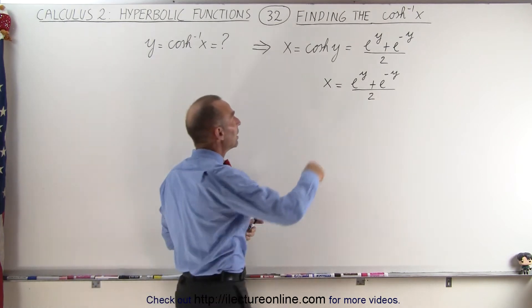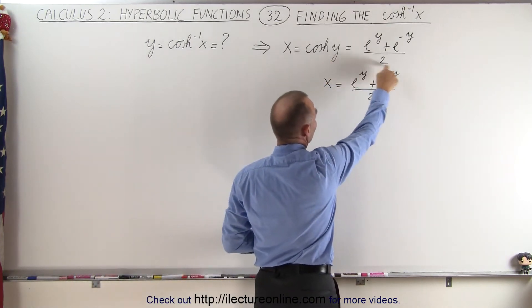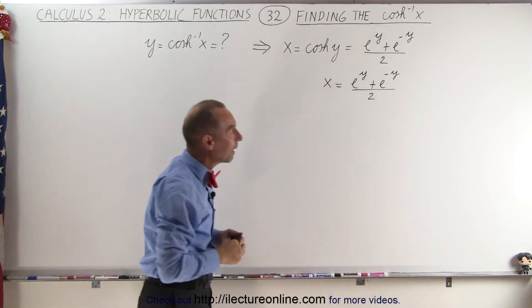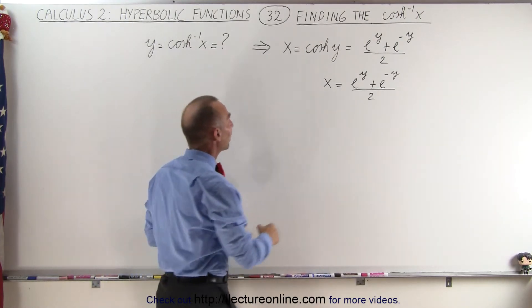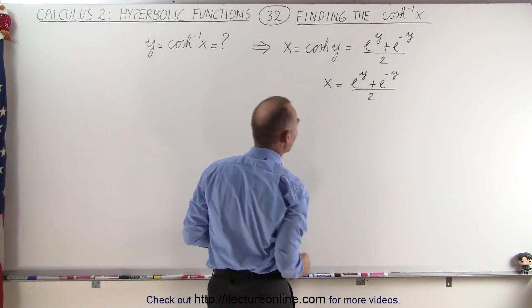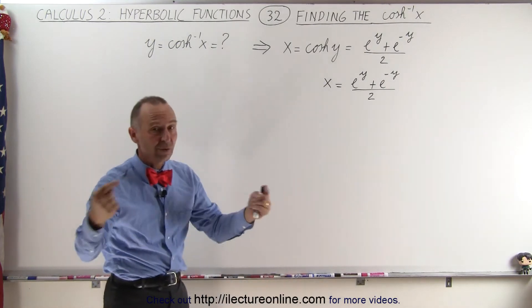And since the hyperbolic cosine of y is defined by e to the y plus e to the minus y divided by 2, we can then set x equal to that expression, and now all we have to do is reverse.